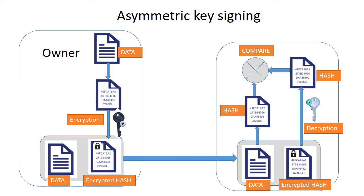then it is sure that the data was sent from the owner only. You may ask what we achieve by signing the data using asymmetric keys. There are a couple of positive effects: first, we ensure that data was not changed during the transfer, and second, if those hashes match, we can be sure that the data was sent exactly by the owner.